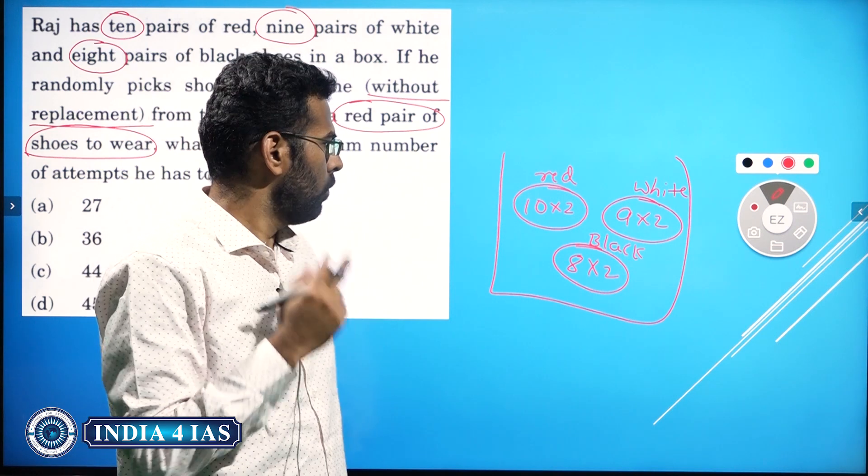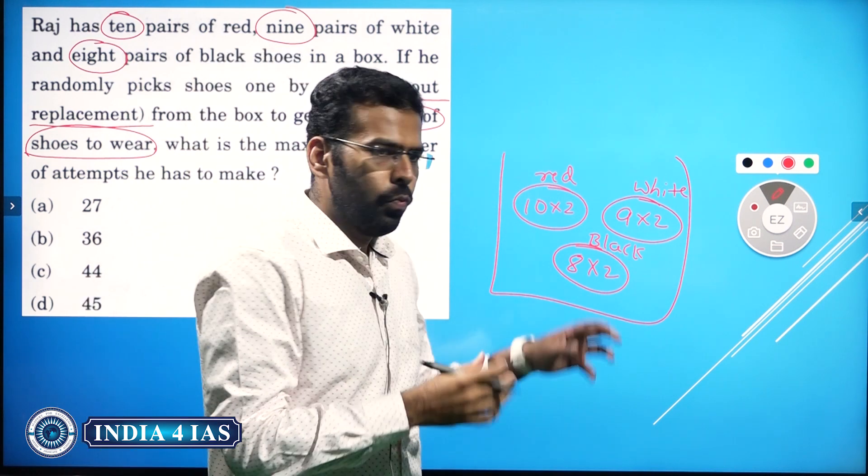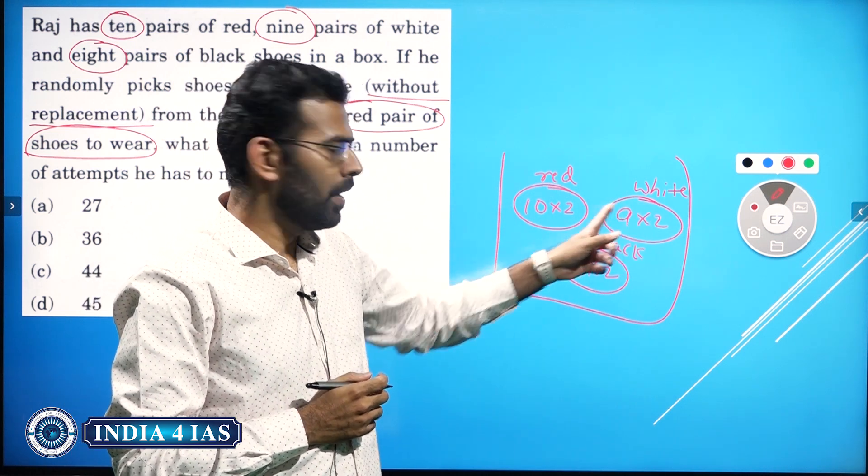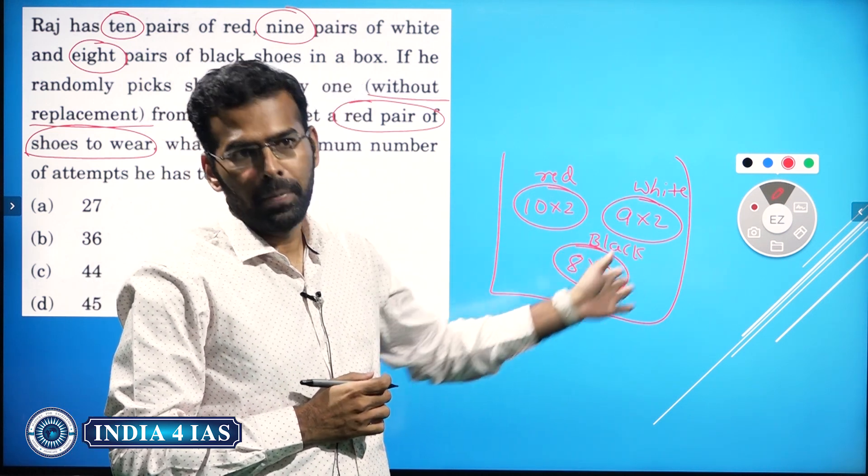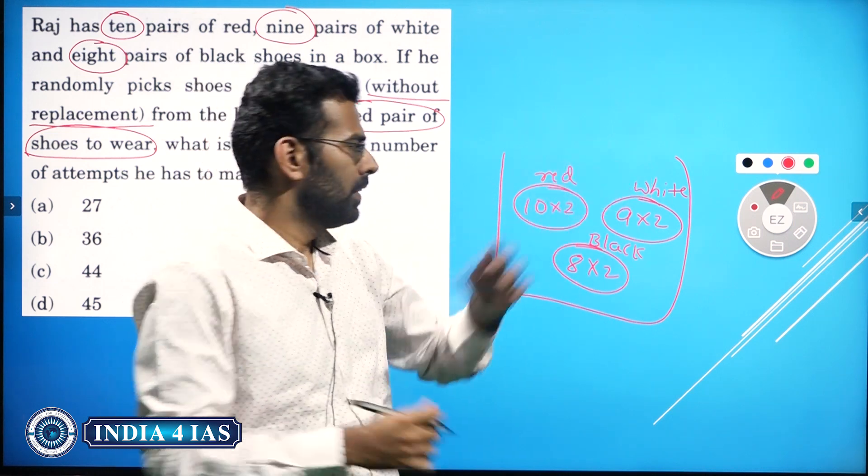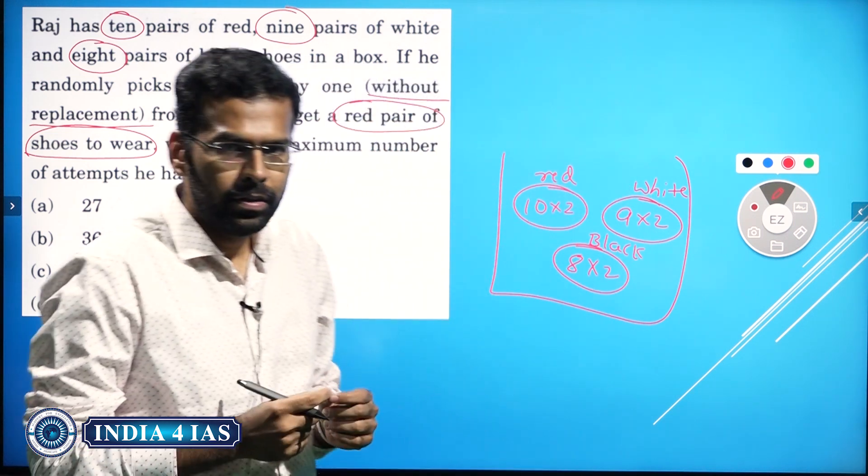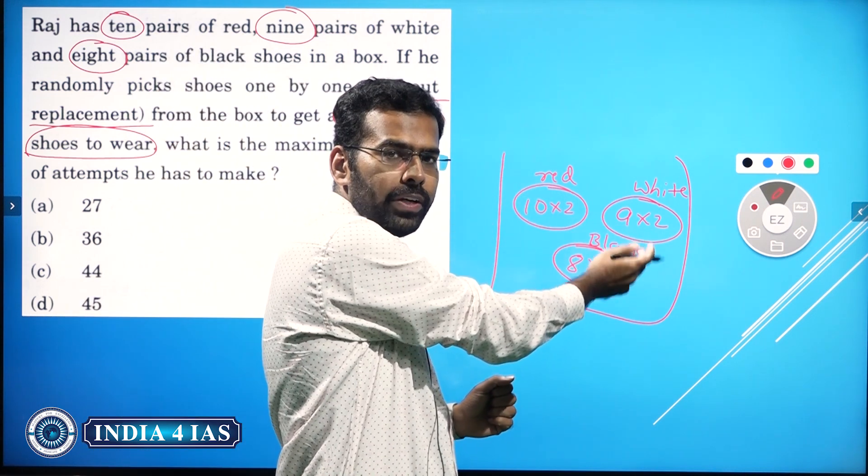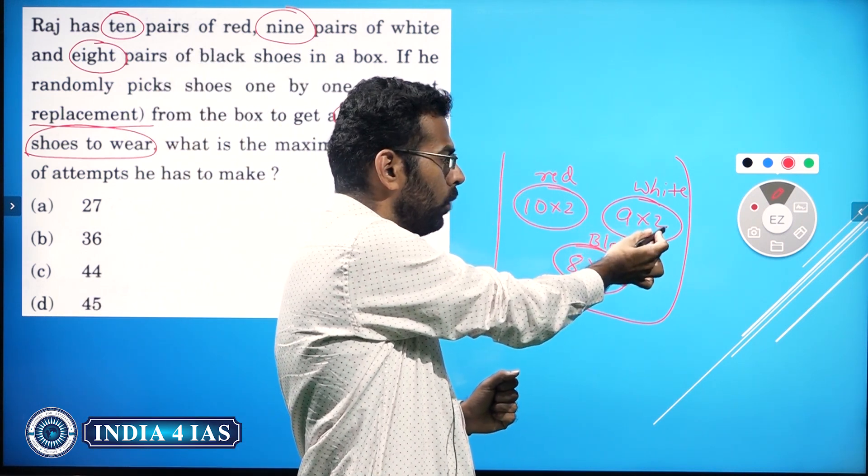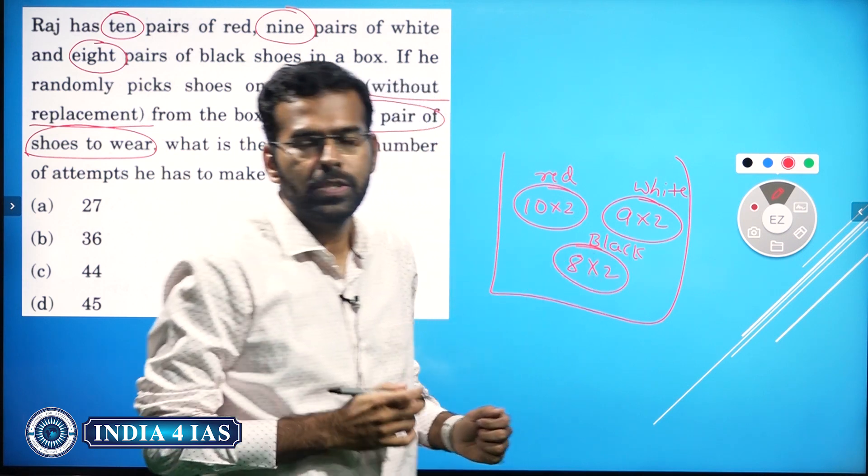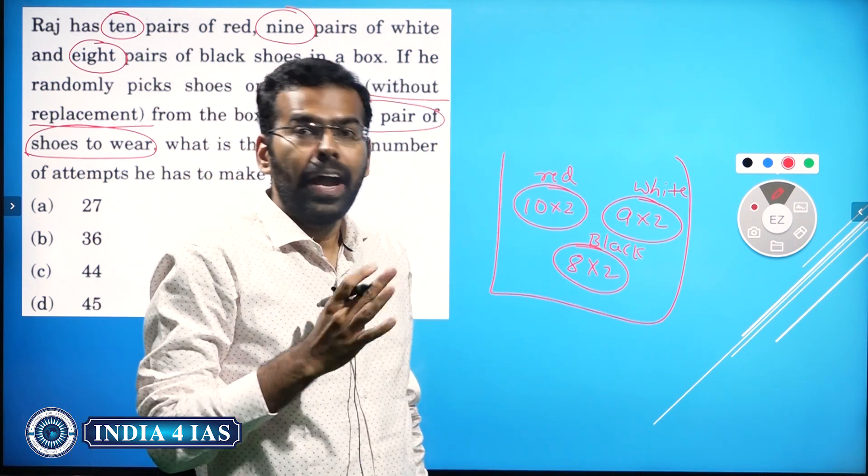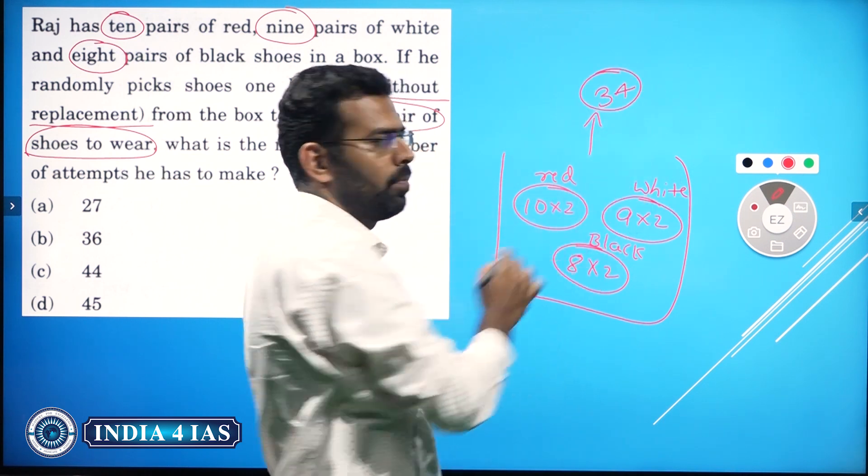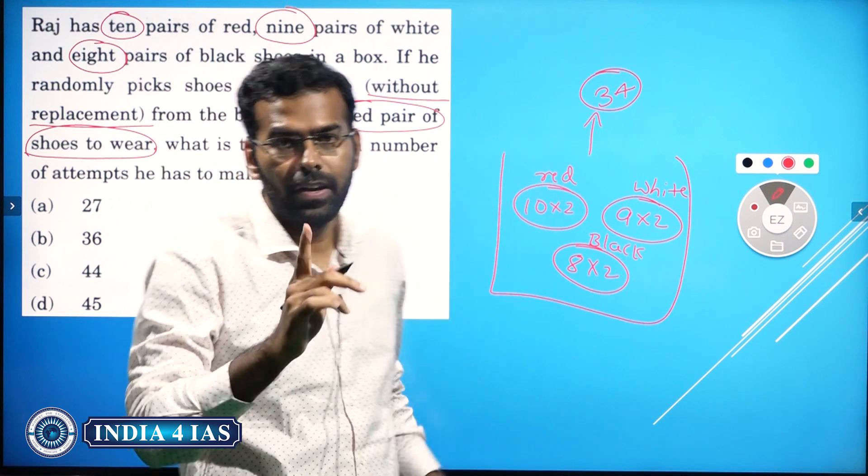Now, you are blindly picking up the shoes. Try to see: when you pick blindly, you are not sure until your white and black are completely taken away. That means to be sure that you are getting the red shoes is when you take all this 9×2=18 plus 8×2=16. Until you take out 34 shoes of these two (white and black), you will not be sure whether you're getting red or not when you're picking blindly.